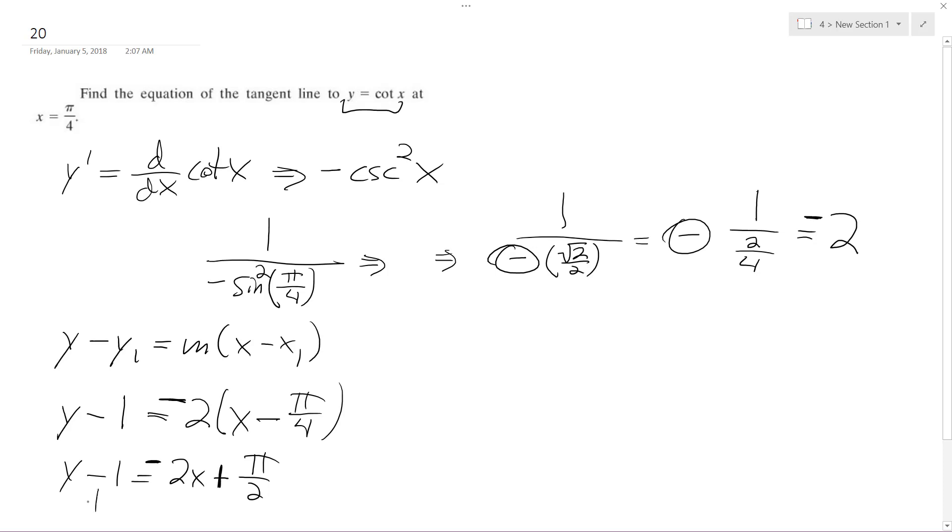So I'm going to add this over here, plus 1, so my final solution is going to be y, this is the equation of the tangent line: y equals negative 2x plus pi over 2 plus 1, and that's it. All right, I hope that helps, thanks for watching.